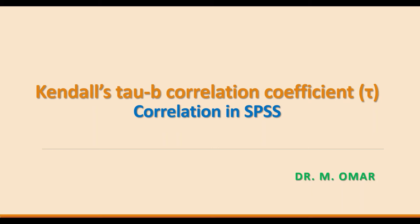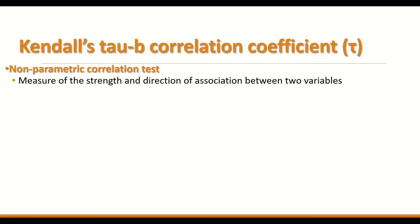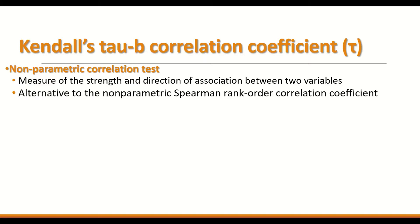Kendall's tau correlation coefficient is a non-parametric correlation test used to measure the strength and direction of association between two variables. It is an alternative test to the non-parametric Spearman's rank order correlation coefficient.